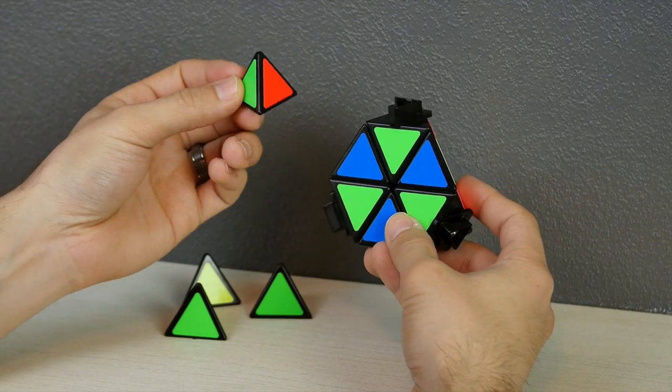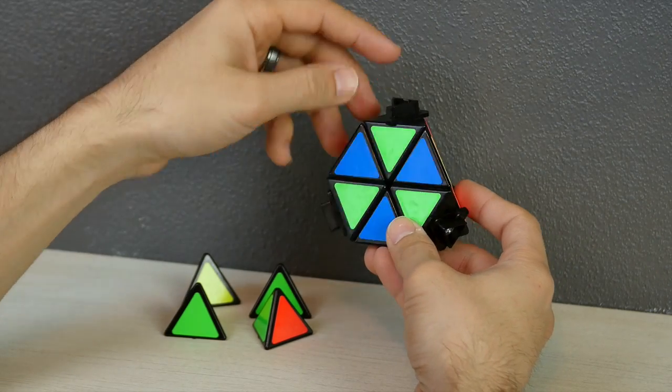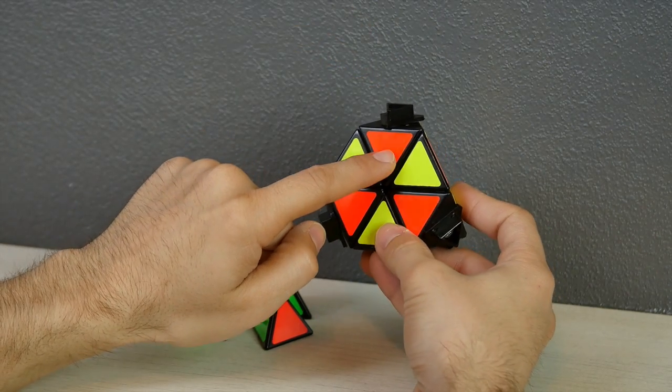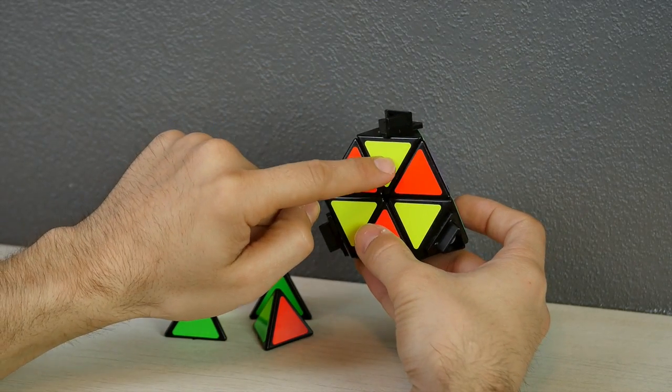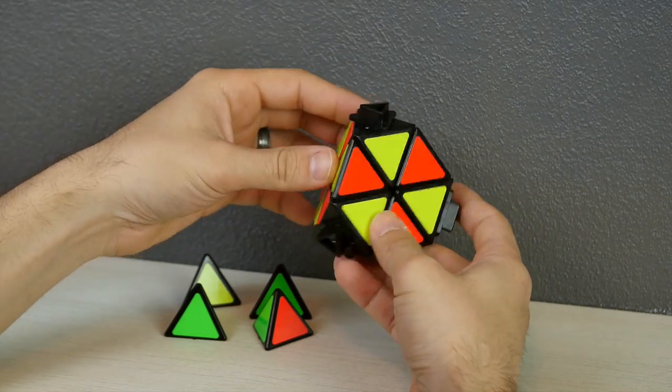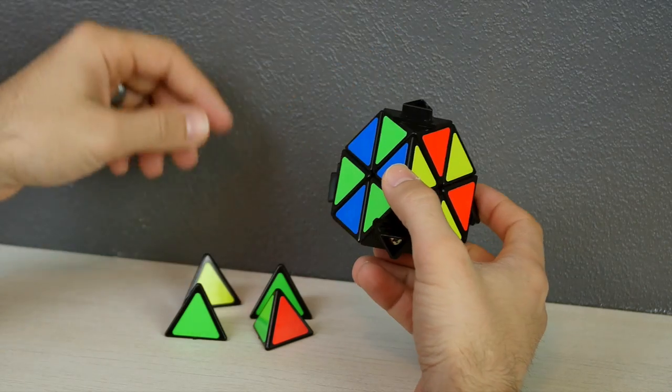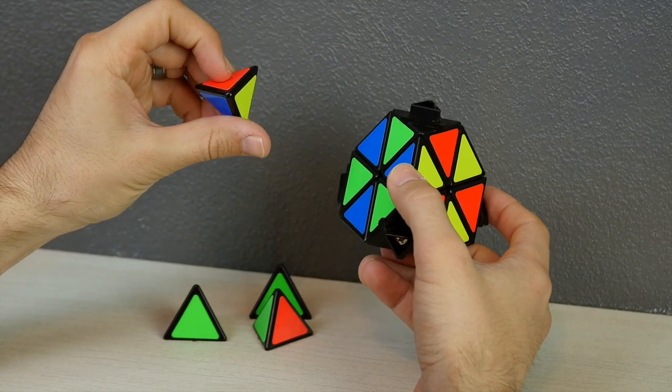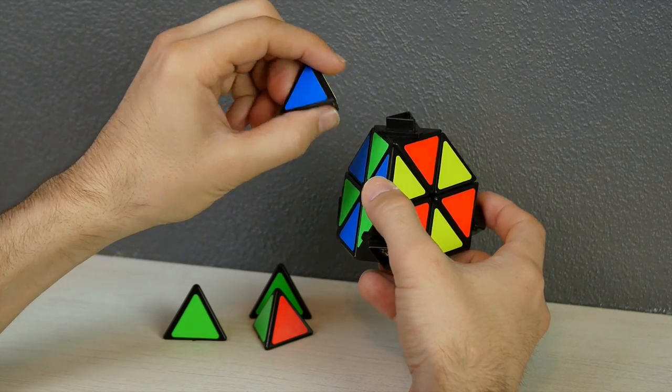Here we have green, so that means this needs to be blue. On this side we have red, so that means this needs to be yellow. And here we have yellow, which means this needs to be red. So we're looking for a red, a yellow, and a blue piece. Red, yellow, blue. That just pops back on right there.